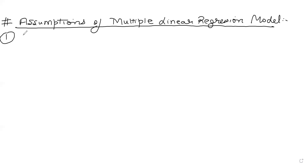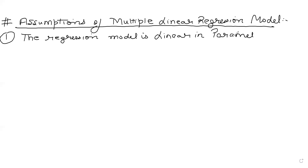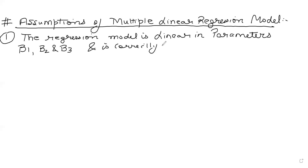First assumption: the regression model is linear in parameters B1, B2, and B3, and is correctly specified. It may or may not be linear in the variables X2t and X3t, but it has to be linear in the parameters B1, B2, and B3.